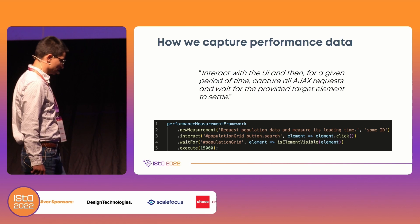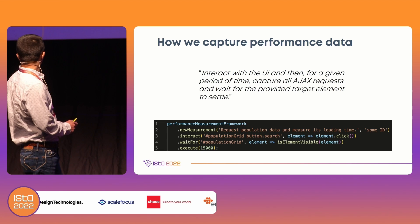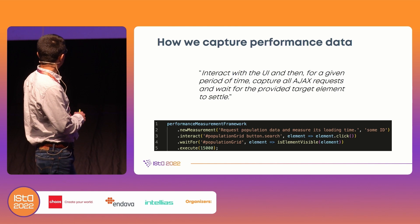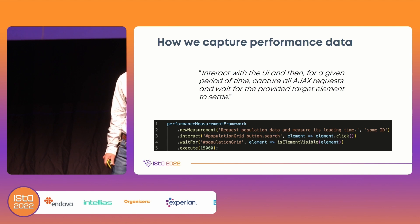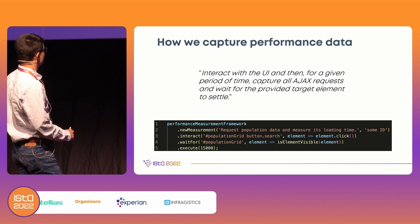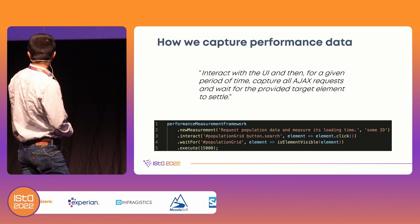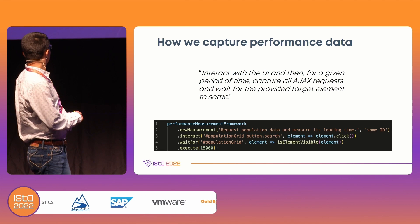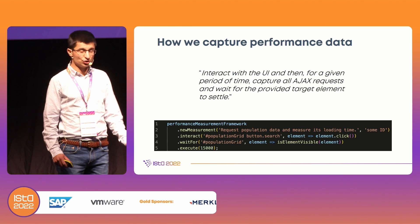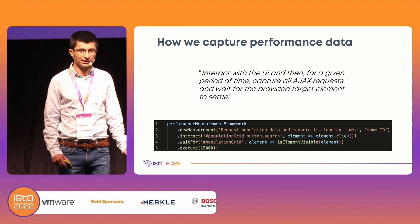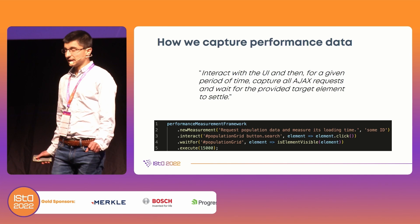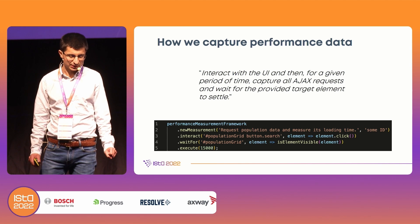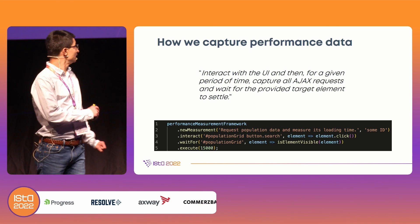In code, this looks like this. We create a new performance measurement session, give it a name and some ID. Then we instruct the framework to interact with an element by giving it a selector and a callback function — for 100% of the time, we simply click on this element, but as you can see, it's more flexible than that. Then we instruct the framework to start waiting for some other element — for example, the population grid from our earlier example — to settle. Each time the element changes, this callback function is run over the target element. We give our framework a static timeout of, in this case, 15 seconds, so that the performance measurement session runs for at least that long.